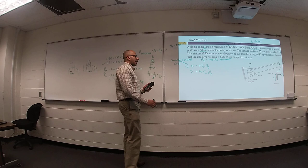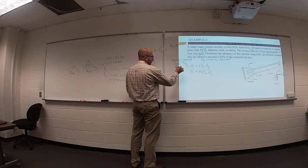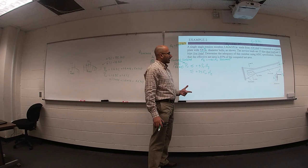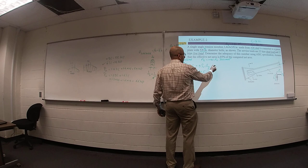I would like to be sure this value is smaller than or equal to this value to avoid yielding, and this value to avoid fracture. What is this value? 0.9 times F yield 36 times your area gross from table 2.86.